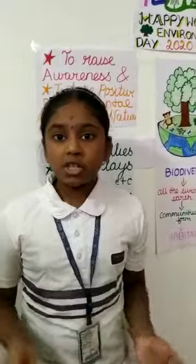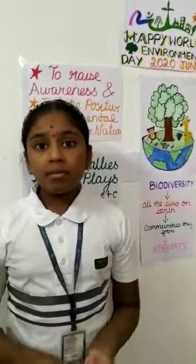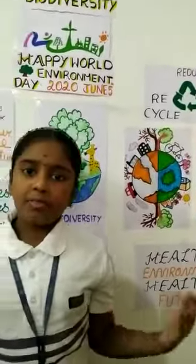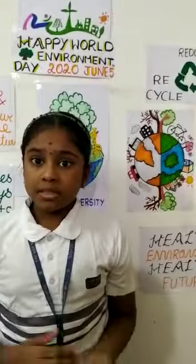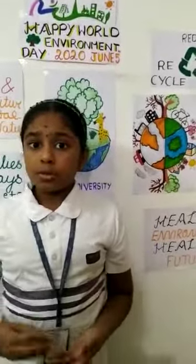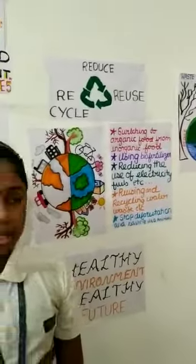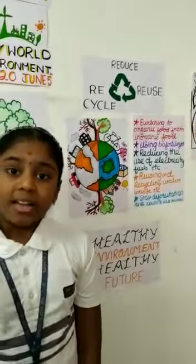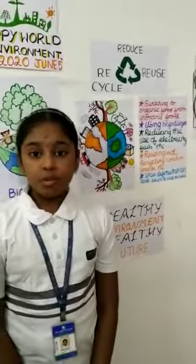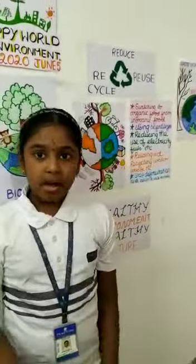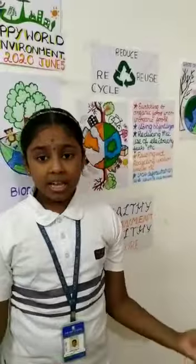Biodiversity is very essential for the survival of all life on earth. The 3R techniques — reduce, reuse and recycle — can be very effective in protecting the environment from danger. Some small and effective steps to protect the environment include: switching to organic food instead of inorganic food, using bio fertilizers, reducing the use of electricity and fuel, reusing and recycling water and waste, stopping deforestation, and saving wild animals from extreme dangers.